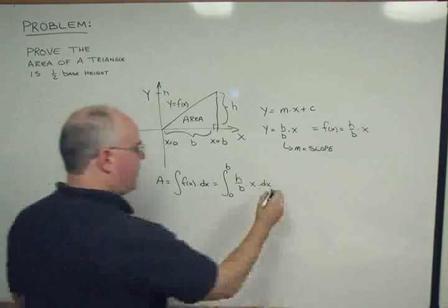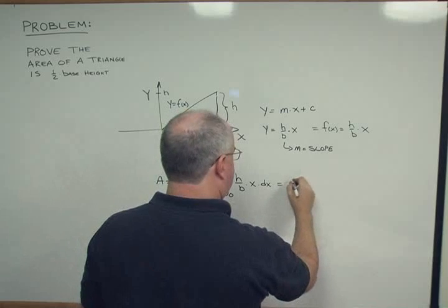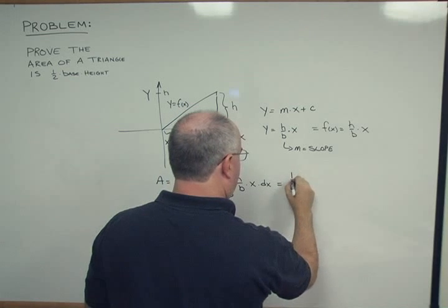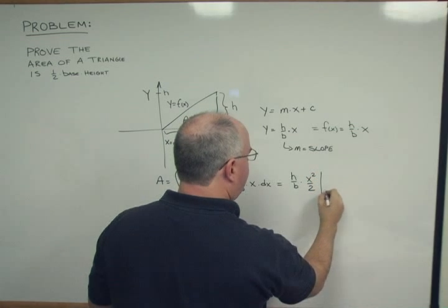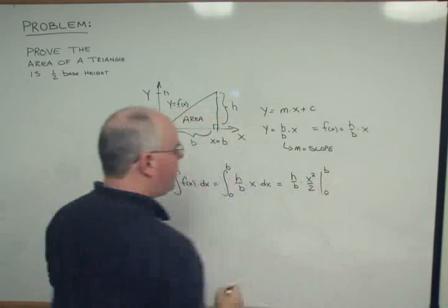Let's integrate. So we get h over b times x squared over 2 between limits of integration 0 and b.